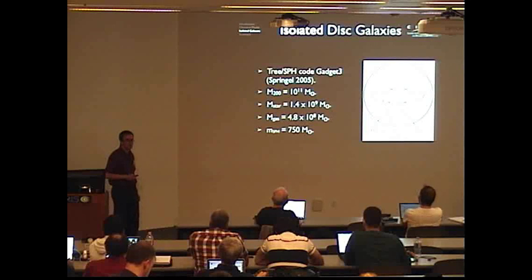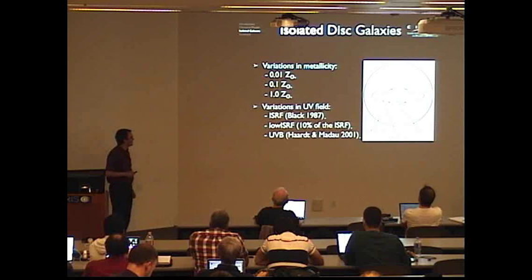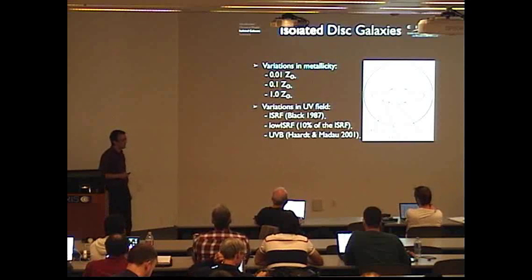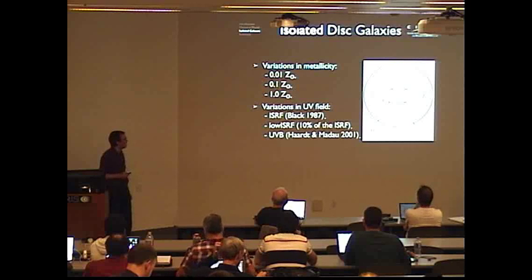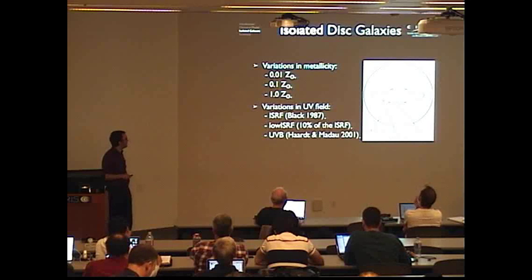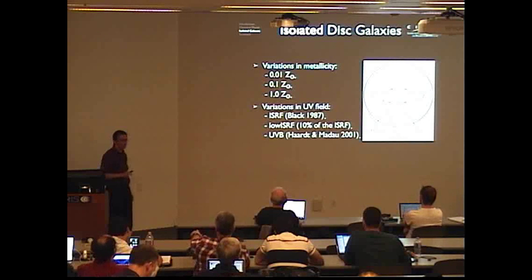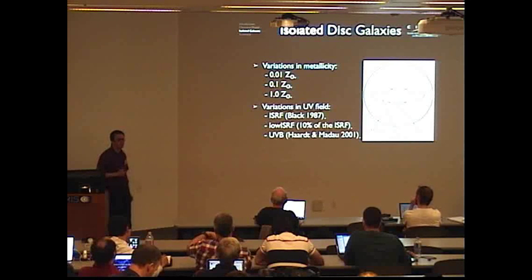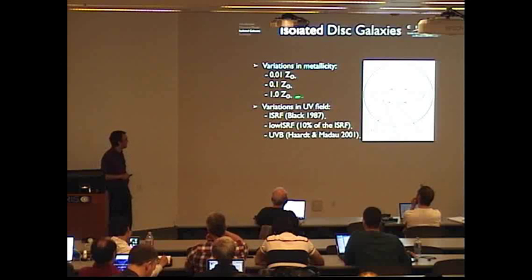These simulations have particles with 750 solar masses per gas particle with 100 SPH neighbors. We ran a series of simulations with different metallicities and different radiation fields to see how these affect galaxy evolution and chemistry. We consider three metallicities from 1% solar up to solar metallicity, holding metallicity fixed — not including enrichment from stars. For the solar metallicity we repeat with different radiation fields. For all simulations we have a constant uniform UV radiation field with a local self-shielding model applied so each gas particle can become locally shielded. For our fiducial model we use the local interstellar radiation field measured in the solar neighborhood in the Milky Way from Black 1987.